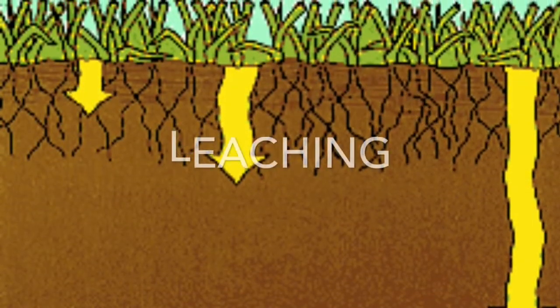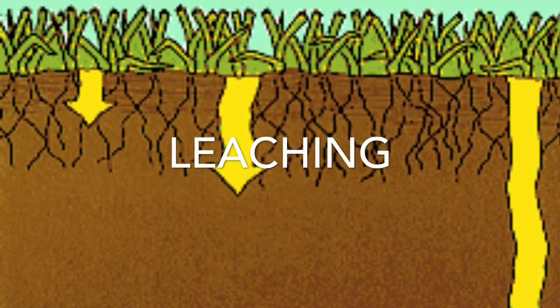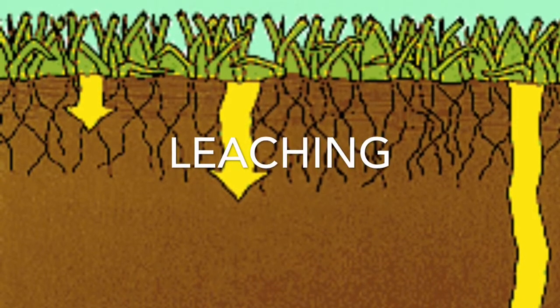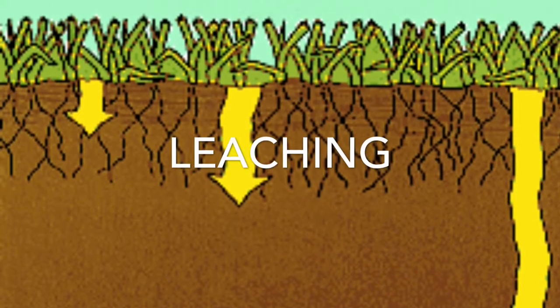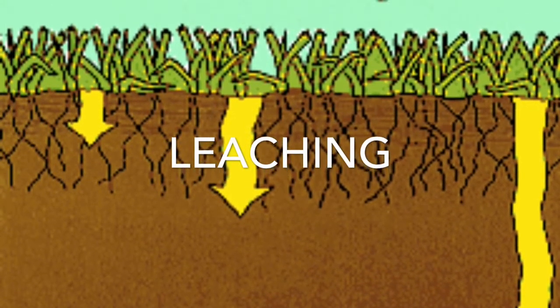This is the removal of minerals from soil by water as it moves downward through the soil. Leaching occurs in wet climates.